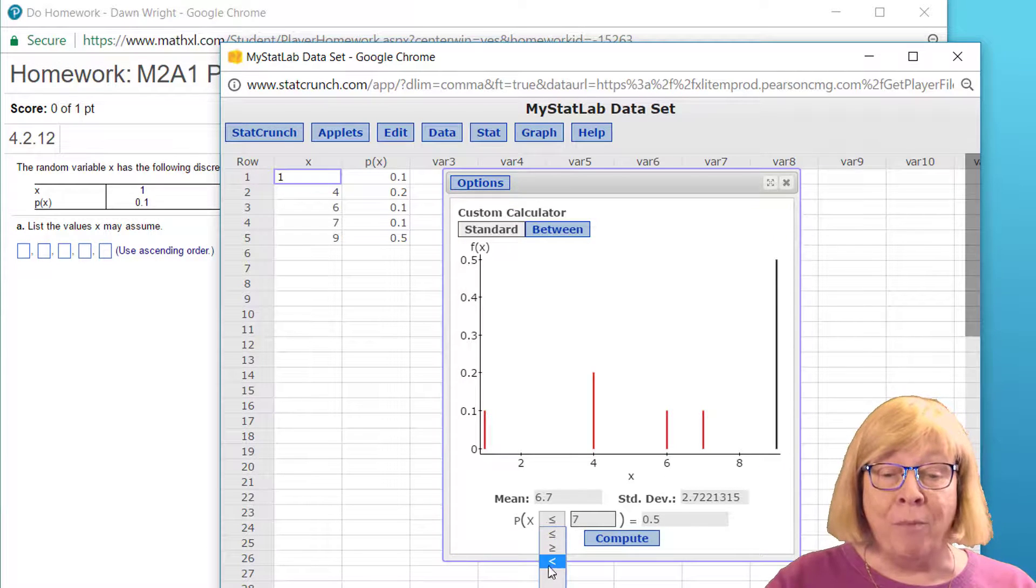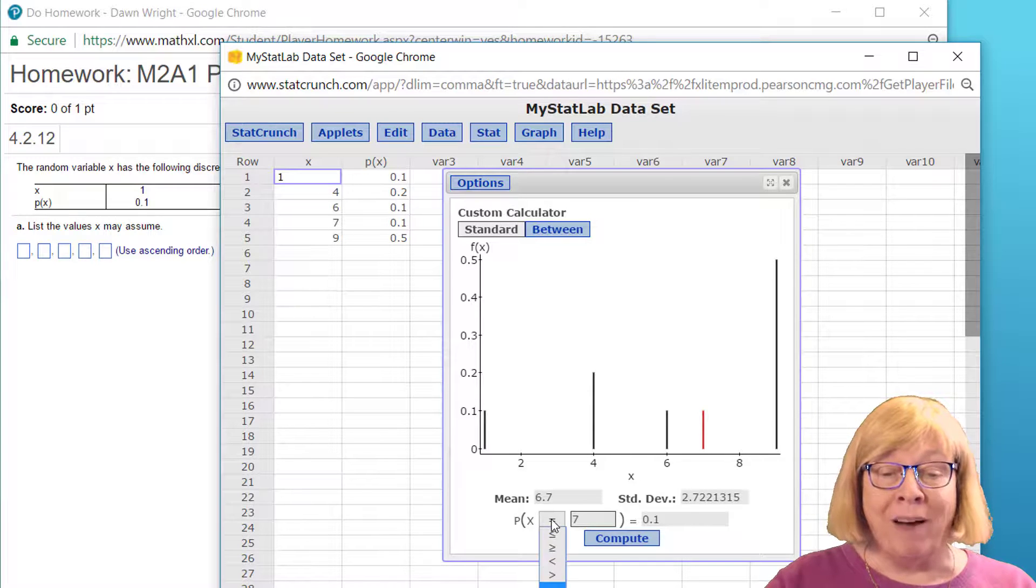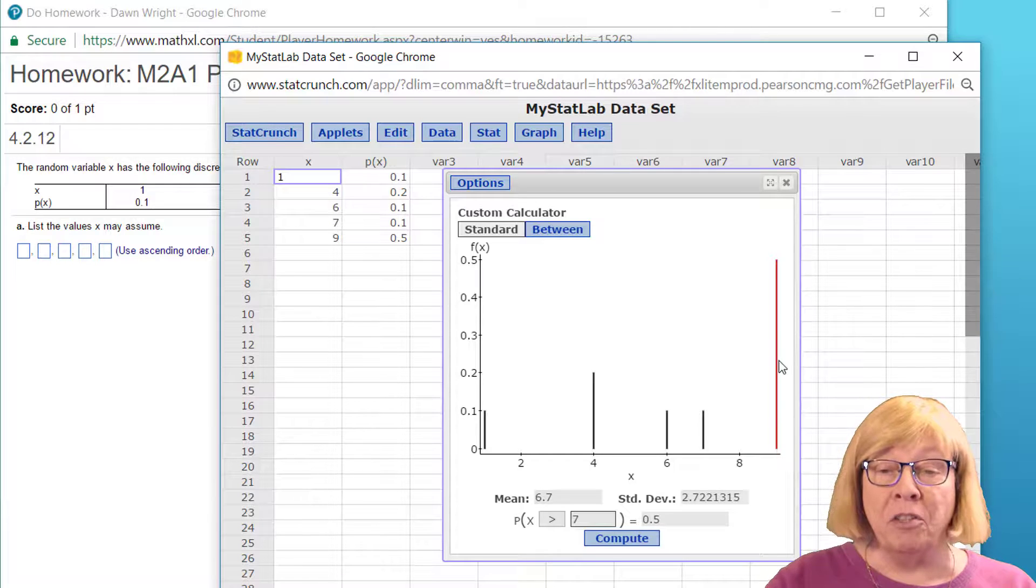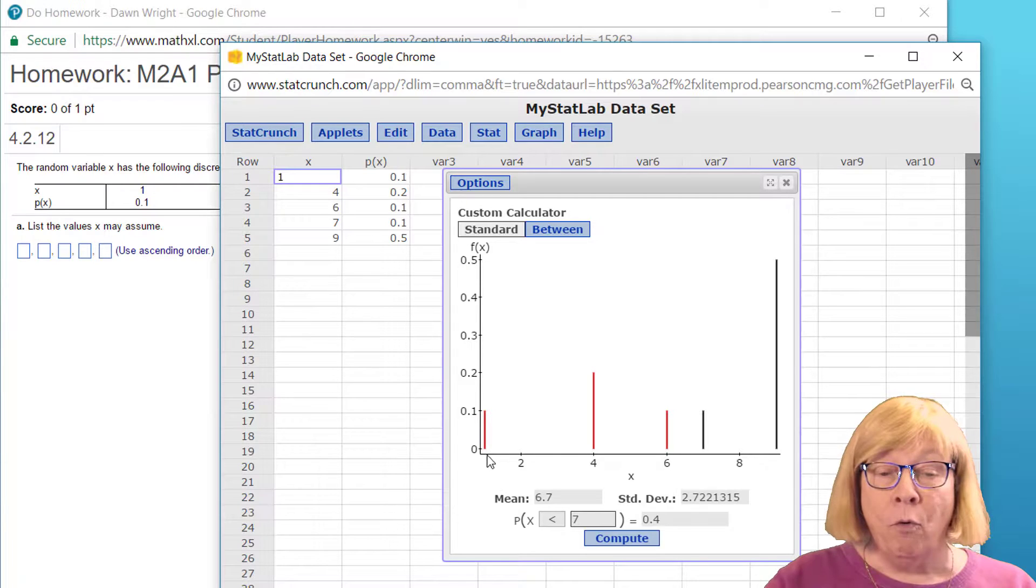But what about the probability exactly seven, which is point one, the probability of greater than seven, which would be over here just the value of nine at point five, the probability less than or equal to seven, we already done that one, probability of less than seven, which would be one, four, and six point four.